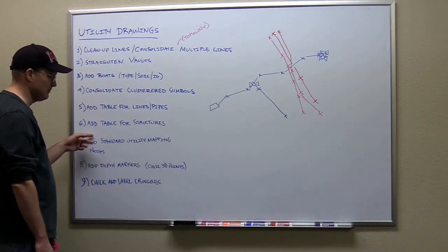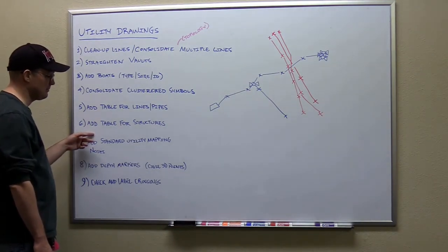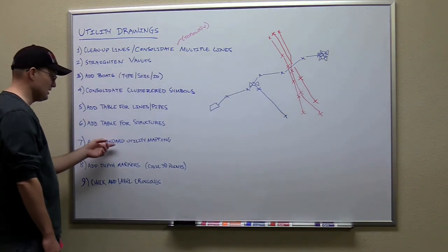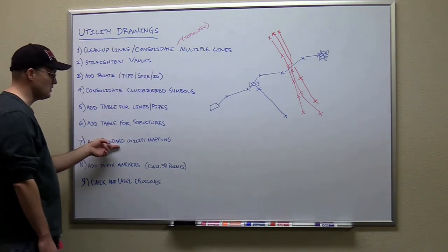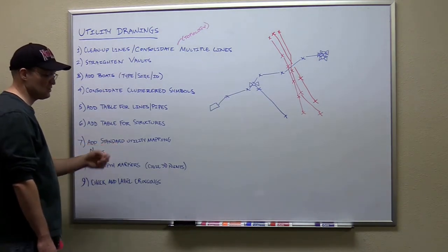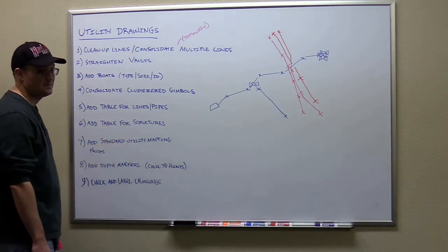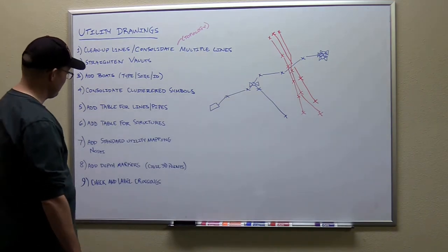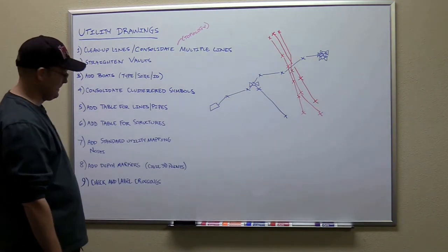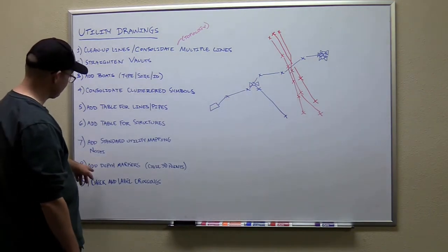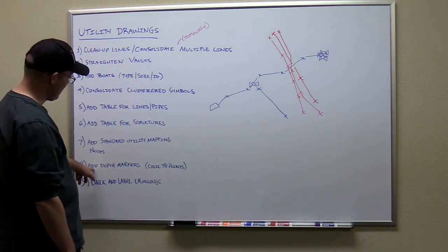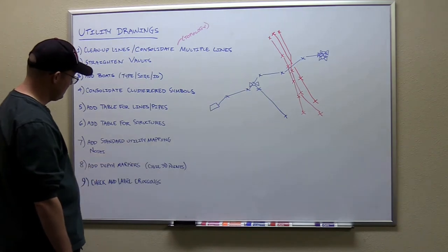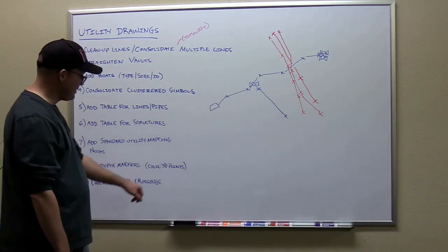We might have some standard utility mapping notes but I need to look, so you need to get these from me. Usually that's something you're just going to cut and paste. Do you want that in the email too? Yeah, okay. We're going to add depth markers, and I think we're going to do that with a special Civil 3D point style — I did it on Harrison. When you get to that step, just come and get me.